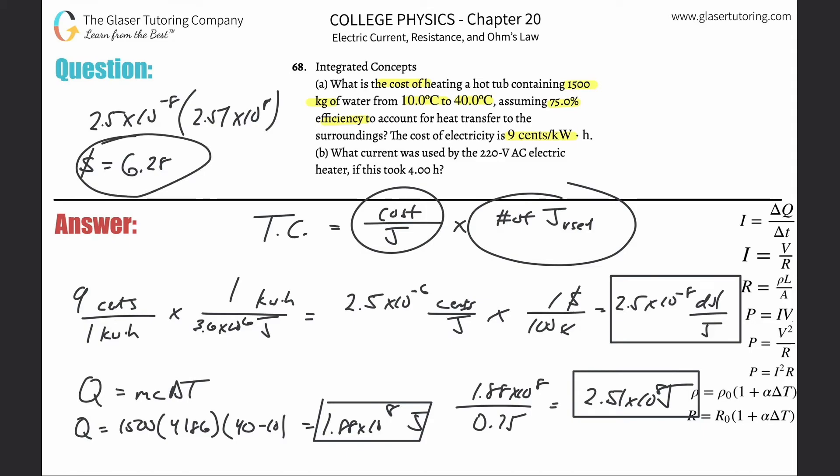All right. So then it says letter B, what current was used by the 220 volt alternating current electric heater if this took four hours. Okay. So it sounds like power, current, time, all that stuff. So power is equal to IV. We've got to find the current. So then I is going to be equal to P over V. Decompose the power into energy per time. So energy per time all over then the voltage, right?